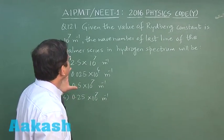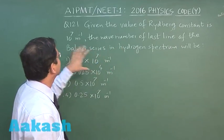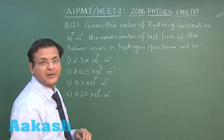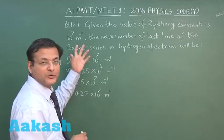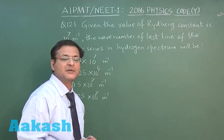Now, this question 121 is based on Rydberg's formula. It says that given the value of Rydberg constant is 10 to the power 7 per meter, approximate value has been given, you have to use this only. The wave number of the last line of the Balmer series - what is the meaning of last line of the Balmer series?